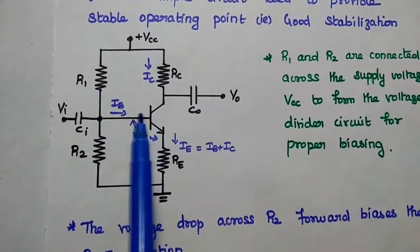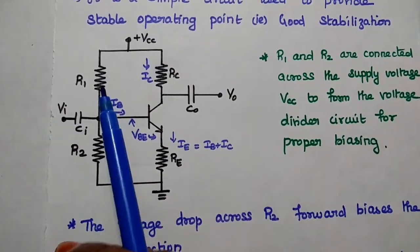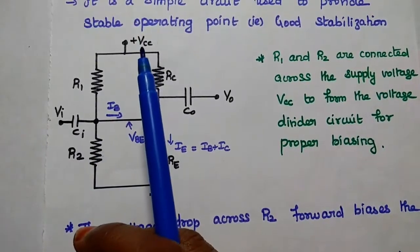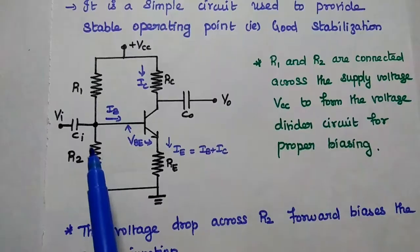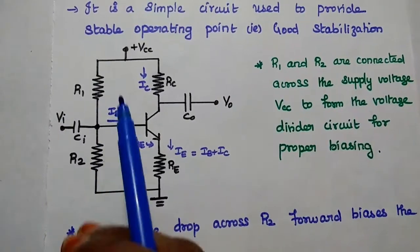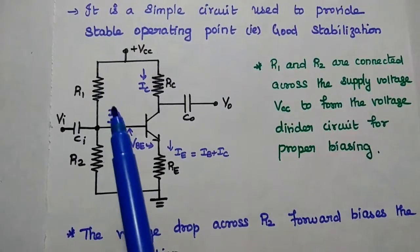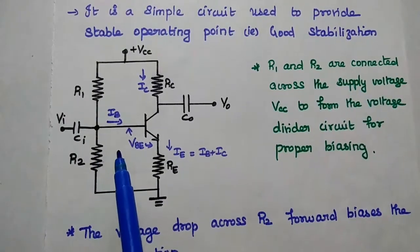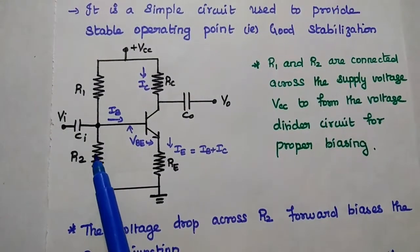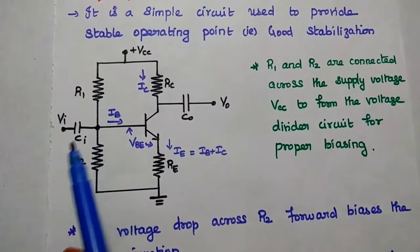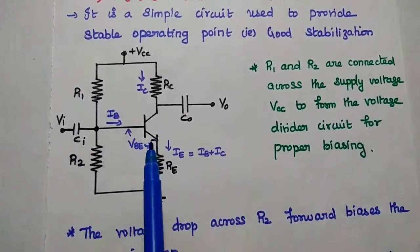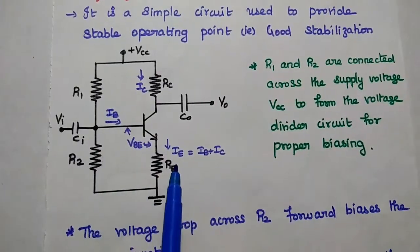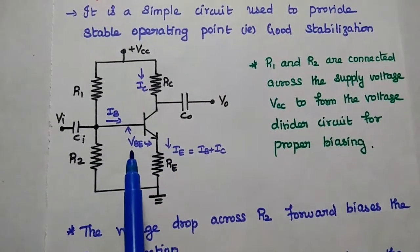This is the circuit diagram of voltage divider bias. In this, R1 and R2 resistors are connected across the supply voltage VCC to provide the proper voltage divider circuit. We need this voltage divider circuit to get proper bias at the input side. This can be achieved by using the voltage drops across R2 and RE. The voltage drop across R2 forward biases the base-emitter junction, while the voltage drop across the emitter resistor reverse biases the junction.